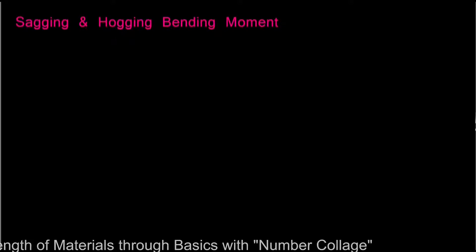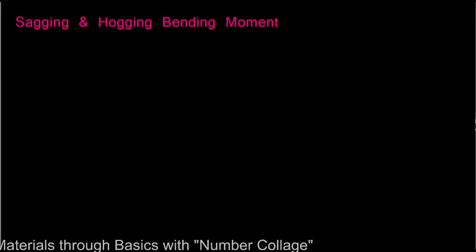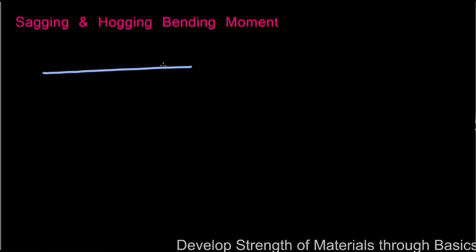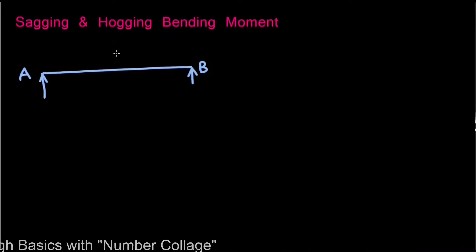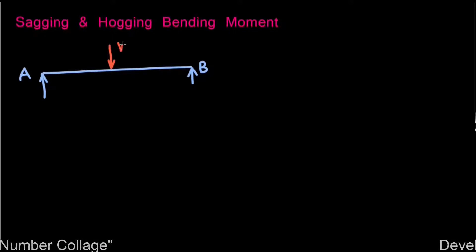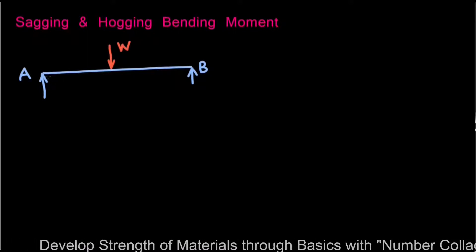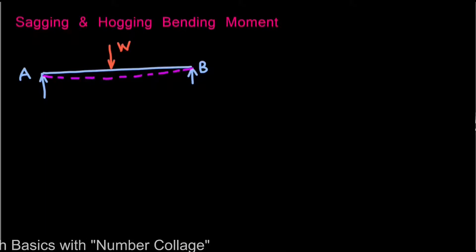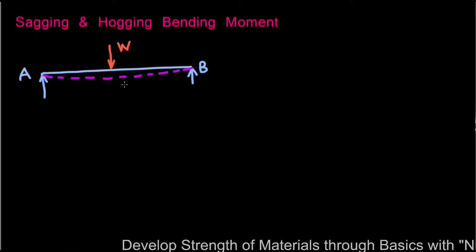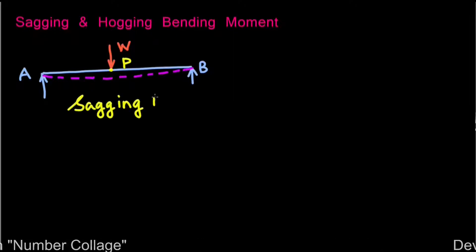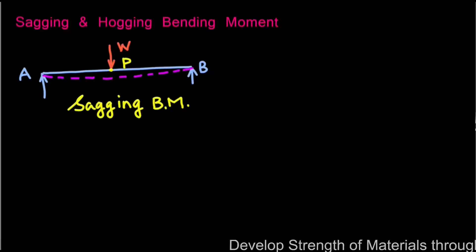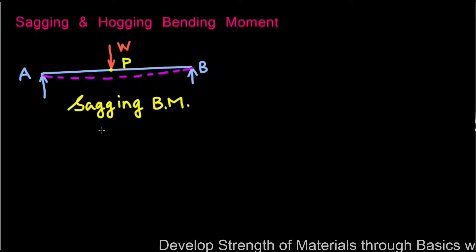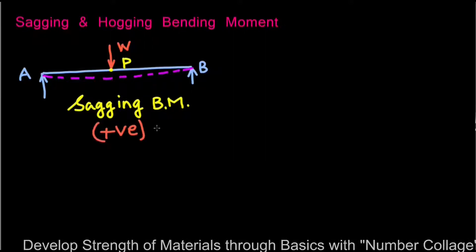Bending moments are also referred to as sagging bending moment and hogging bending moment. When a simply supported beam AB under the action of a vertical load W bends or tends to bend downwards like a bow, then the bending moment at that point P is referred to as sagging bending moment, and this sagging bending moment is treated as positive bending moment.